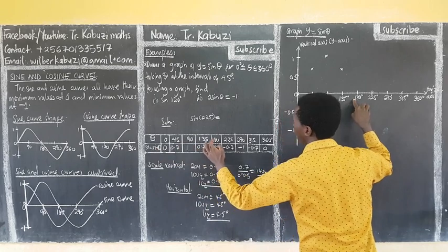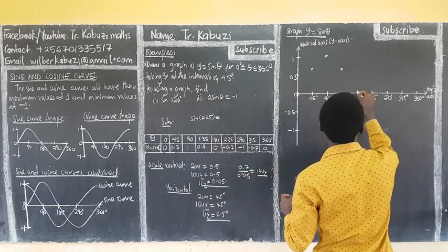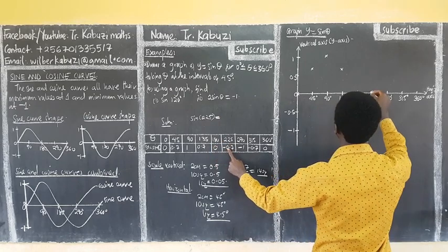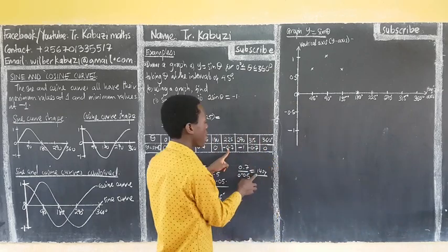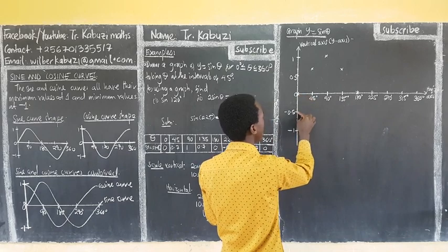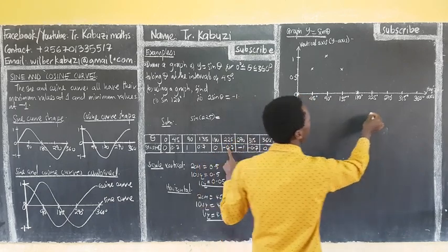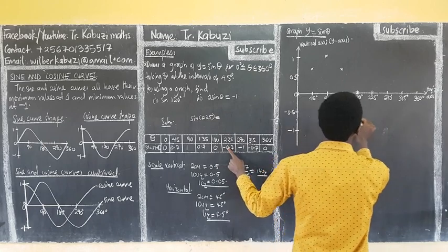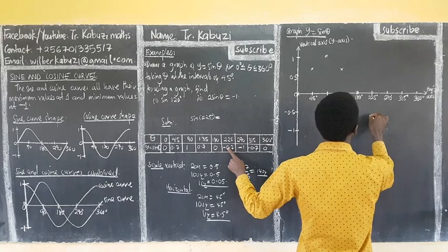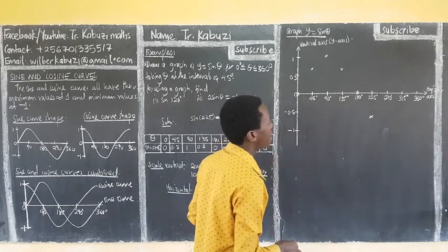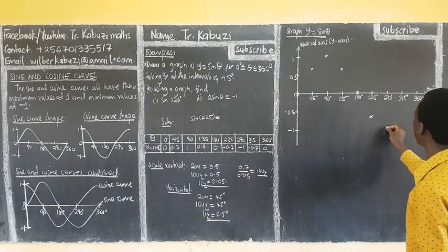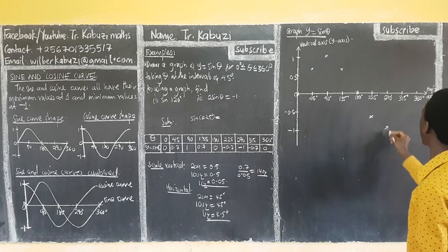Then 180 goes with 0 — so that point is at zero on the Y axis. Then 225 goes with negative 0.7. Since it's negative, I'm going to count 14 small squares going down from the axis. Then 270 is negative 1, which is the minimum — my negative 1 is at the bottom of the graph.